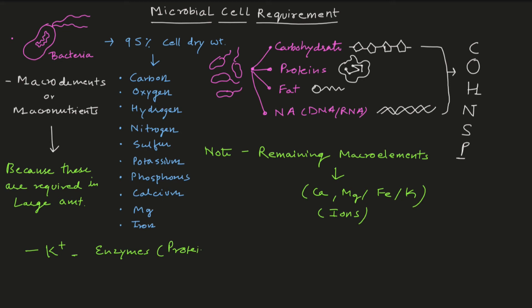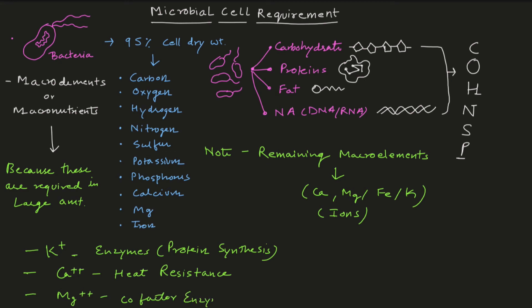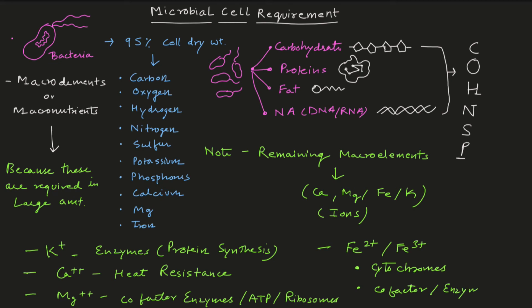Now, what are the functions of these macro elements? Potassium is important for enzyme activity. Calcium is important for heat resistance in bacteria. Magnesium is an important cofactor for various enzymes, plays a role in ATP synthesis pathways, and is important for the functioning of ribosomes. Iron exists in two forms — Fe²⁺ and Fe³⁺ — and is important for cytochromes and as an enzyme cofactor.